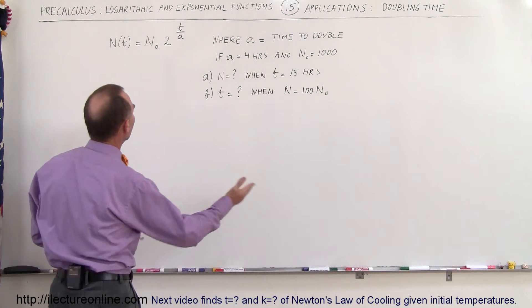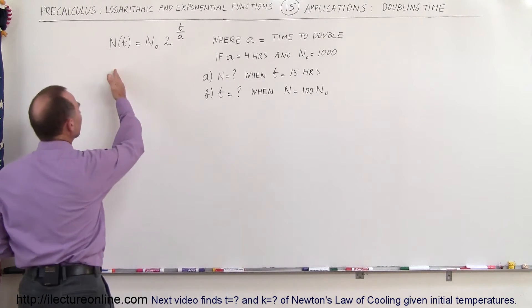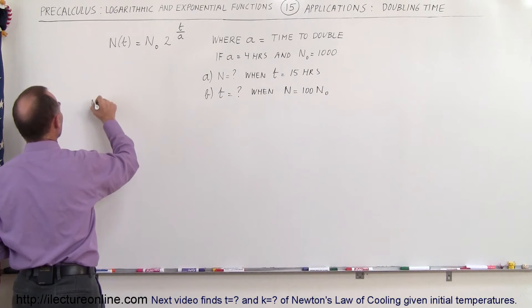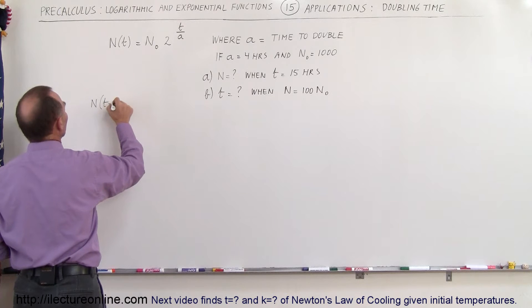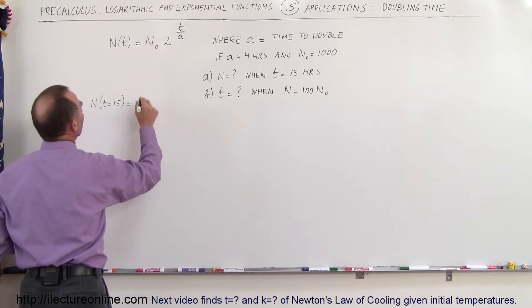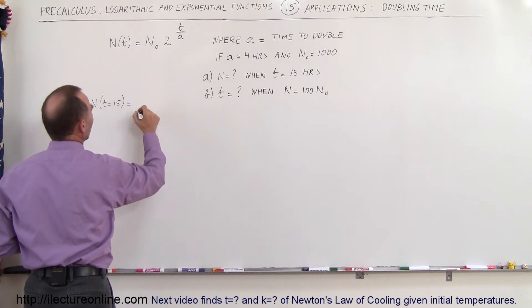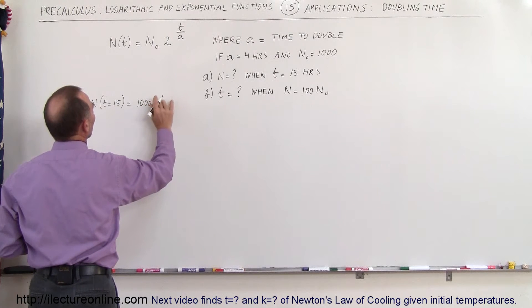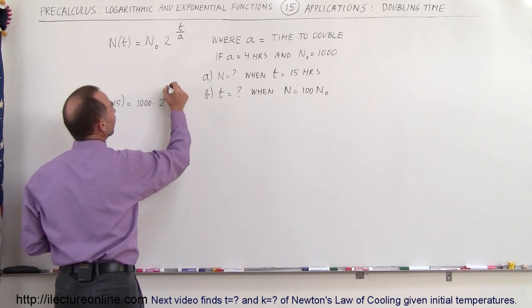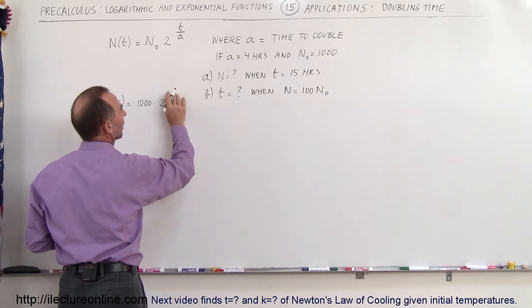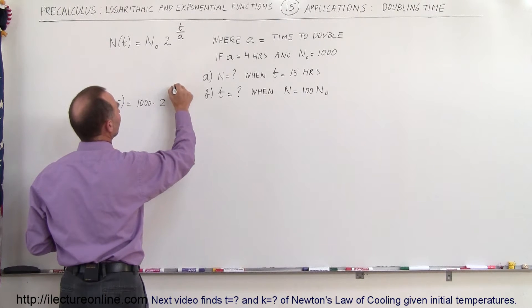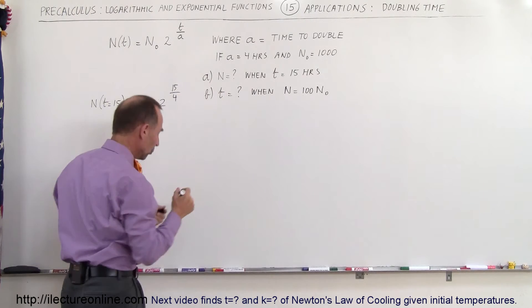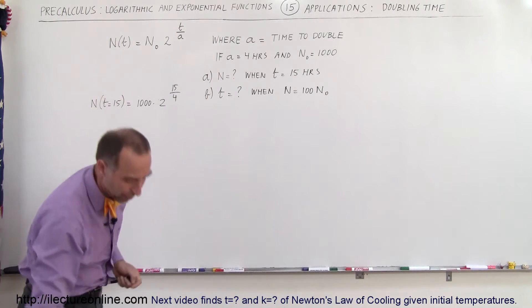How do we do that? The first one is fairly easy — we simply plug in the value for t. So n, the amount we end up with when t is equal to 15 hours, is equal to the original amount, which is a thousand, times 2 raised to the time 15 divided by a, and in this case a is equal to 4. So it's 2 raised to the 15 divided by 4 power.